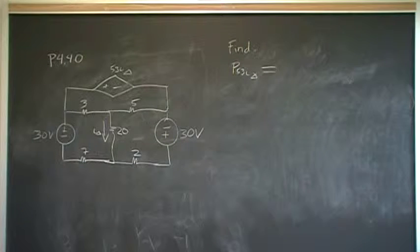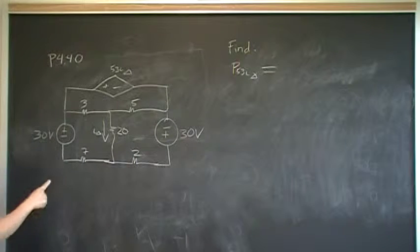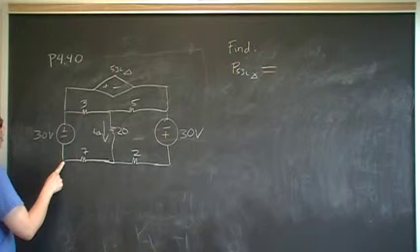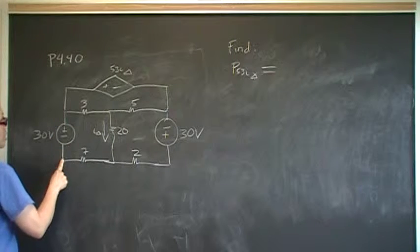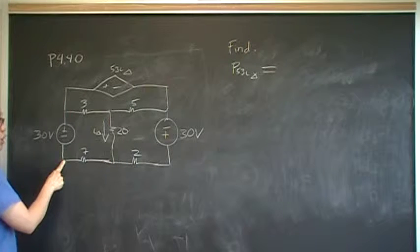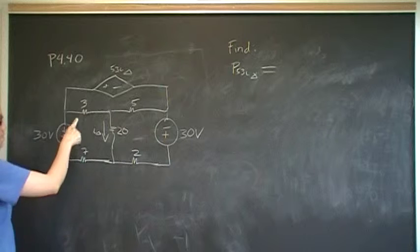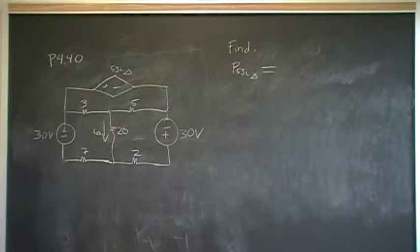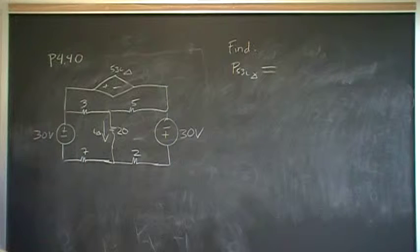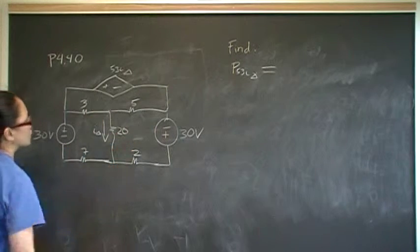A mesh is a connection of circuit elements where the first point ends at the same place — it makes a circle, or a closed loop. That's a mesh, and inside that mesh there's no other mesh. We can look at this circuit and identify three meshes: mesh one, mesh two, and mesh three.